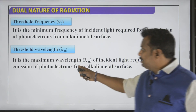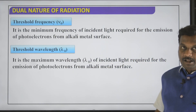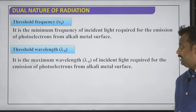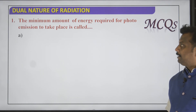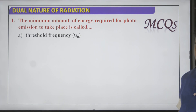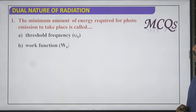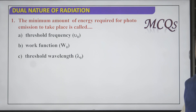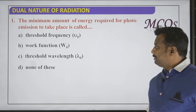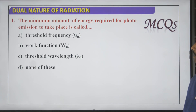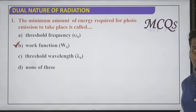Remember that threshold wavelength is the maximum wavelength — this is important for board exams. Now let us see a few MCQs. The minimum amount of energy required for photoemission to take place is called — the options include threshold frequency and others — but the answer is work function, denoted by the letter W naught.